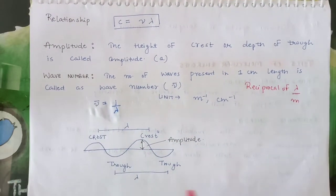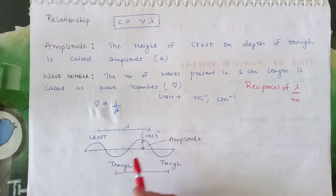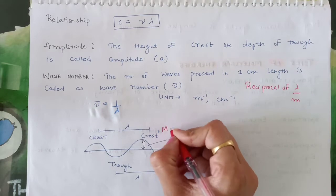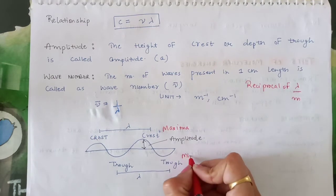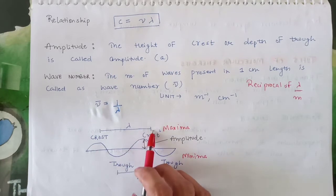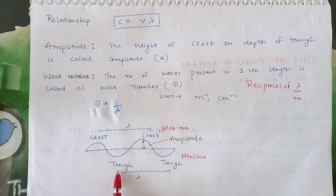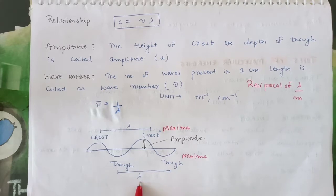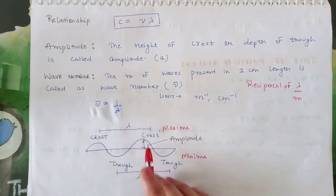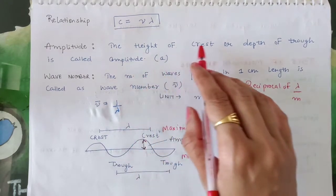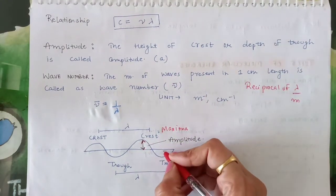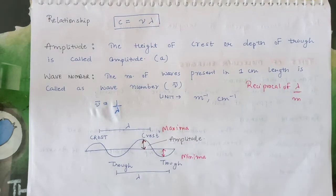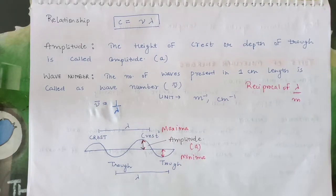Looking at the diagram: the maxima are the crests and the minima are the troughs. The distance between any two consecutive crests is lambda. Similarly, the distance between any two consecutive troughs is also the wavelength. Regarding amplitude — the height of a crest or depth of a trough — this maximum height in the case of a trough gives us the amplitude, denoted as a. So here some of the basic wave parameters have been discussed.